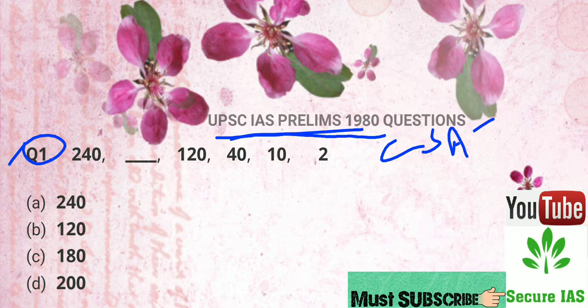So you can go through all these questions. Question 1: 240, blank, 120, 40, 10, 2. Here we have to find the missing number.